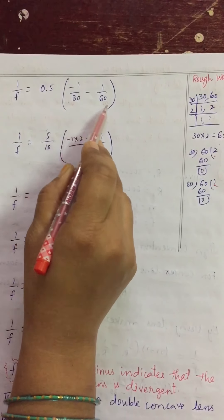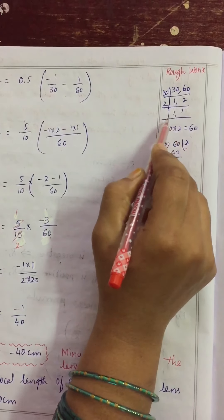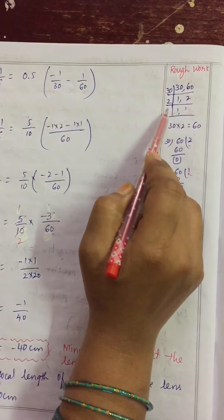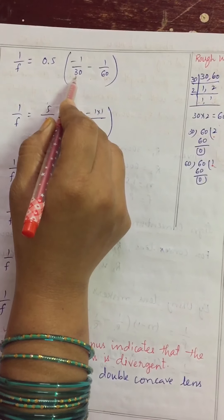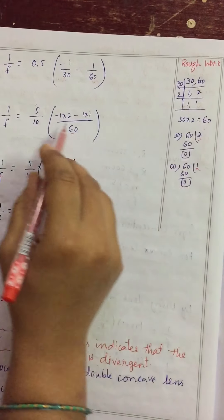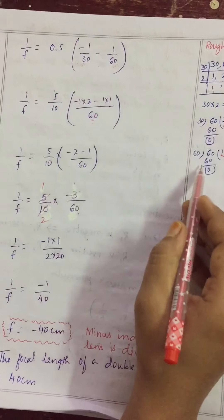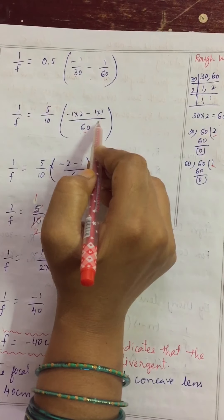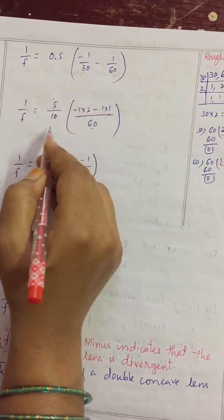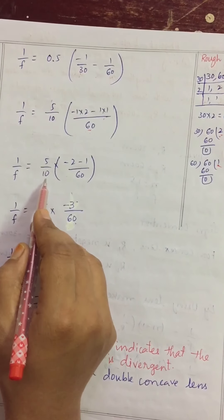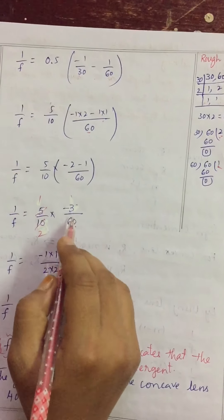We take the LCM of 30 and 60, which is 60. So: -1/30 becomes -2/60, and -1/60 stays as -1/60. Adding the numerators: -2 - 1 = -3. So we have 0.5 × (-3/60). Writing 0.5 as 5/10, we get (5/10) × (-3/60).